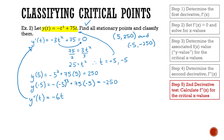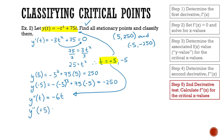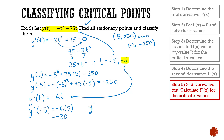Now I can do the second derivative test by calculating the second derivative at each critical t value. For t equals positive five: y double prime equals negative six times positive five, which gives negative 30. For t equals negative five: y double prime equals negative six times negative five, which gives positive 30.